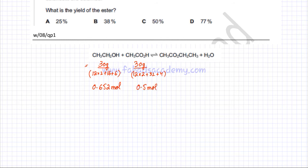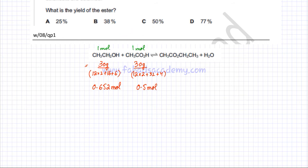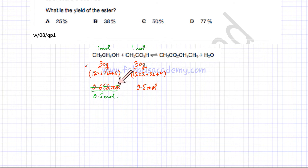Now we consider limiting and excess reagents. According to the equation, 1 mole of ethanol reacts with 1 mole of ethanoic acid — the ratio is 1:1. So 0.5 moles of ethanoic acid will react with exactly 0.5 moles of ethanol. This means ethanol at 0.652 moles is in excess; only 0.5 moles are needed.